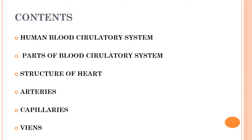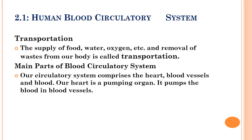In today's lecture, we will cover the following topics: human blood circulatory system, parts of blood circulatory system, structure of heart and its working. Then we will study the three types of blood vessels. The first one is arteries, second is capillaries, and the third is veins.